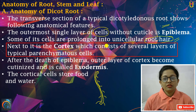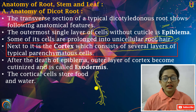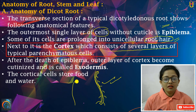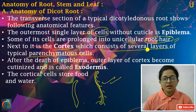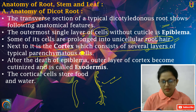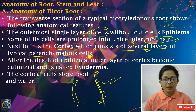Next to it is the cortex, which consists of several layers of typical parenchyma cells. Outer layer hoti, inner to fauchah. Inner layer hoti hai — which are different layers hoti hain. Jo outer layer hoti hai, single layer hoti hai, but inside the cortex several layers hoti hain — three, four, five, six — and cells hoti hain? Parenchyma cells hoti hain.